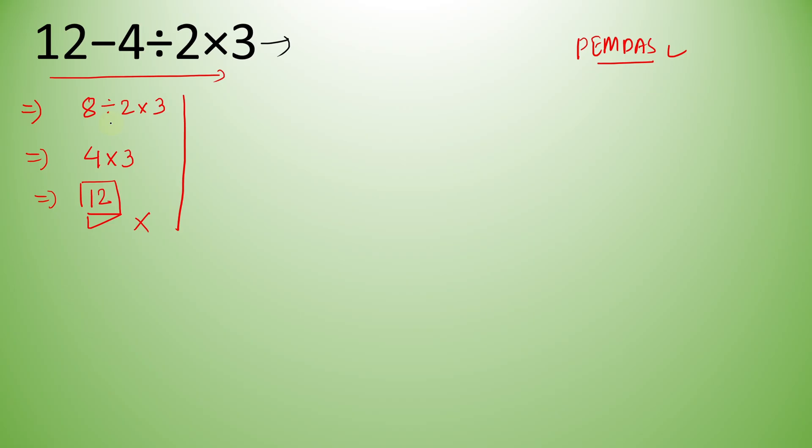We will rewrite our question: 12 minus 4 divided by 2 times 3. Now we have to solve it. There are three operations: subtraction, division, and multiplication. As we know, multiplication and division have the same priority.